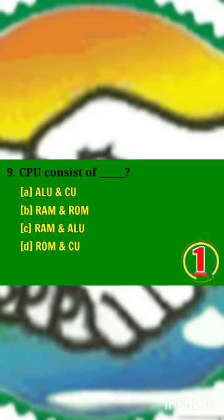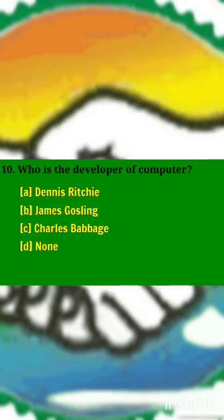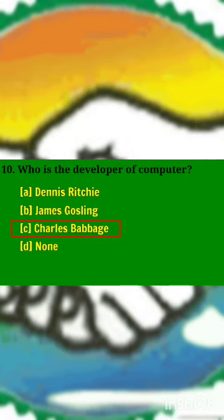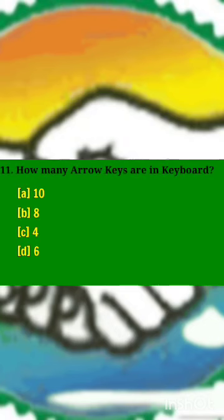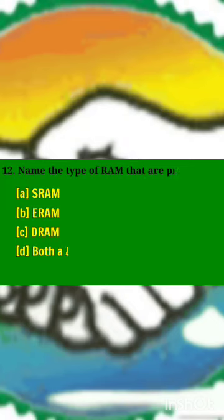CPU consists of? Answer A: both ALU and CU. Who is the developer of computer? Answer C: Charles Babbage. How many arrow keys are in a keyboard? Answer C: four arrow keys.